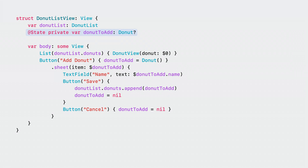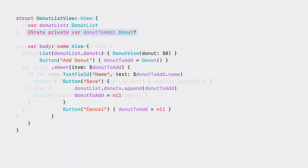When the sheet is presented, the donutToAdd state variable is used to bind values to the editable fields. The donutToAdd property is managed by the lifetime of the view it's contained in.